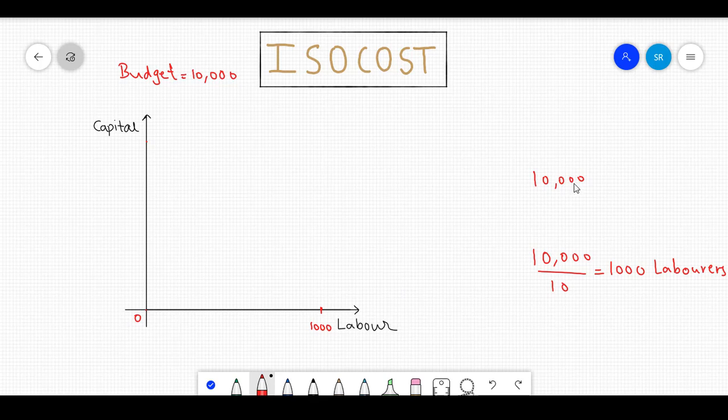Similarly, if you spend all of your budget on purchasing only capital, then the maximum capital that you can buy is Rs.10,000 divided by 20, which equals 500. Notice that this is the maximum capital you can buy, and this point on the graph represents that if you spend all your budget on purchasing capital, then you cannot buy any labour.